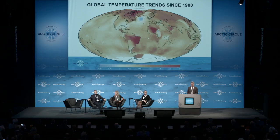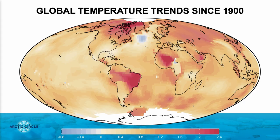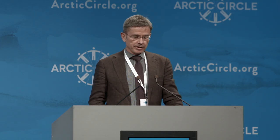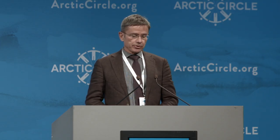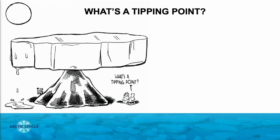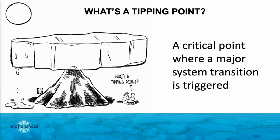If we look at the pattern of modern warming, you will see that it has warmed practically everywhere on the globe with one very notable exception: the subpolar North Atlantic just south of Greenland and Iceland. I will get back to this peculiar thing later. But let me first explain, since this is a session on tipping points, what is a tipping point? To make it short, as a kind of elevator pitch version: it's a critical point where a major system transition is triggered.